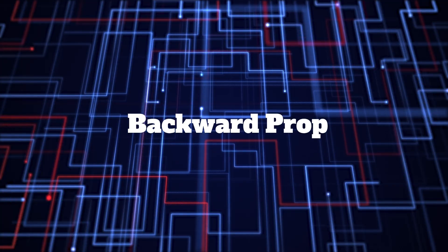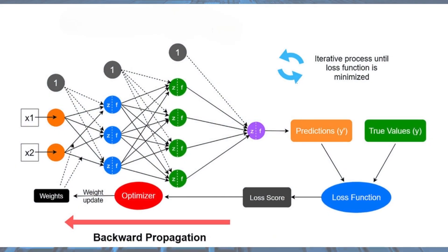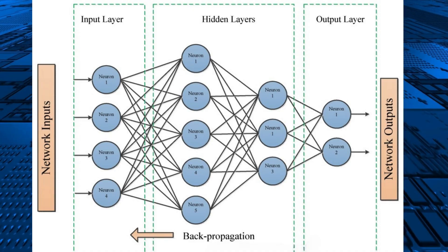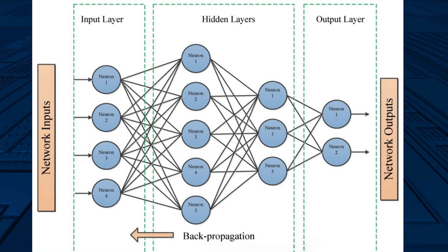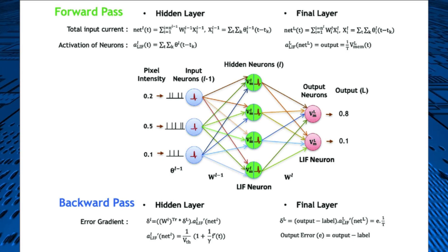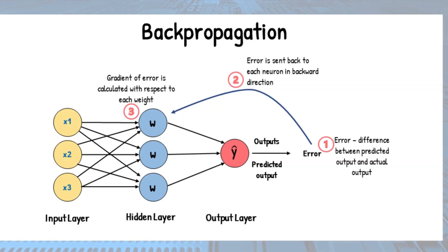Backpropagation is a mathematical algorithm used to update the model's parameters, that is weights and biases, based on the gradients of the loss function with respect to the model's parameters. This process involves propagating the error backward through the network, calculating the gradients, and using optimization techniques such as gradient descent to update the parameters in the direction that reduces the loss.